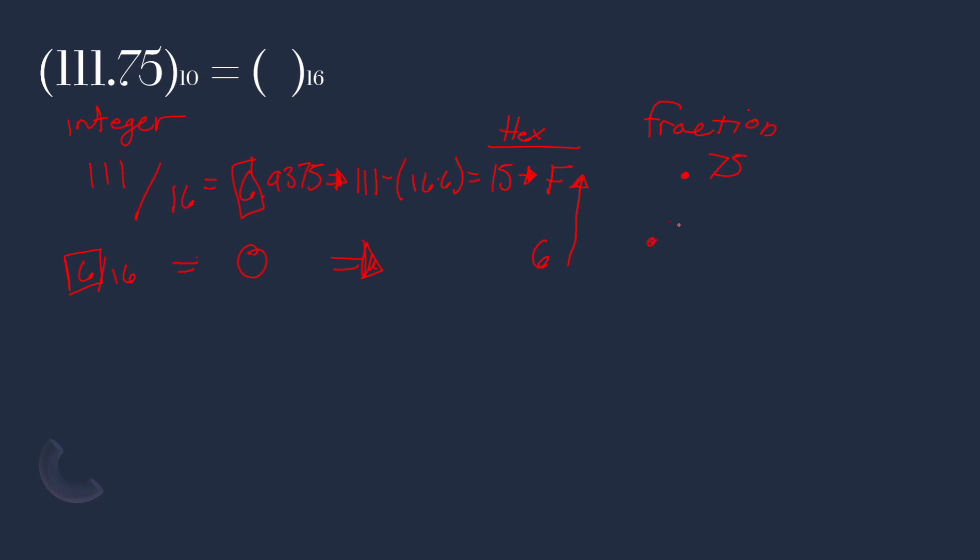For the fraction part, we want to multiply the fraction by 16. So let's figure that out. 0.75 times 16 leaves us with 12.0. So it's going to be 6F for the integer part. 12 corresponds to C. So we are left with 6FC in base 16.